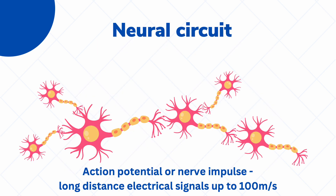The different neurons in our body can all communicate with each other through the means of a neural circuit. This is akin to the electrical circuit that we have in the real world — just like wires connect homes and pass electricity among buildings, in the body we have a collection of neurons which are all interconnected. In order to talk to one another, they pass what we call action potentials, or nerve impulses. These are long-distance electrical signals that can move very fast, up to 100 meters per second.